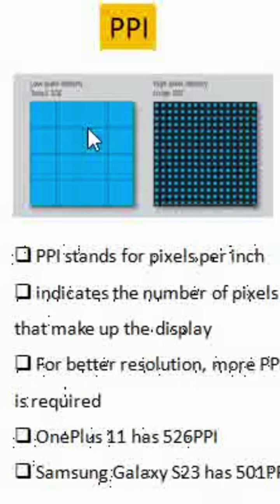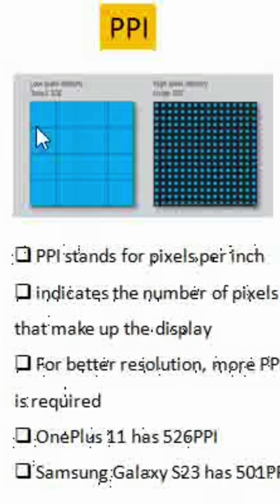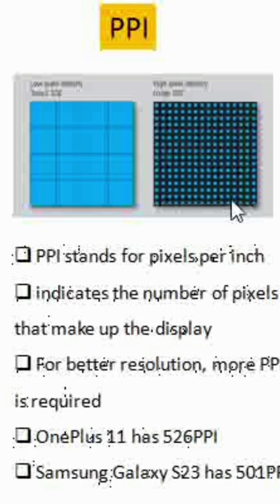We know that the display is made up of pixels in the background. If you can see the image here, this on the left is a low pixel density image and on the right it is a high pixel density image. You can imagine if something is displayed here, it provides a better image than this one. So the resolution is better here.